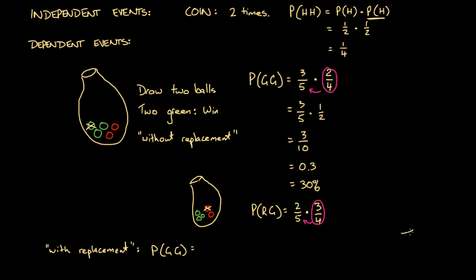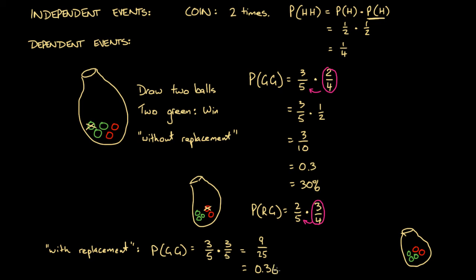Let's redraw our bag: three green balls and two red balls. On the first draw, the probability of getting a green ball is three over five. We take out a green ball, look at it, and put it back. We reach in again — now the probability of getting a green ball is three over five again, because there are still three green balls in the bag. Multiplying through: three over five times three over five equals nine over twenty-five, which is 0.36 or 36%.